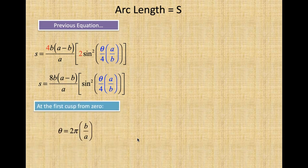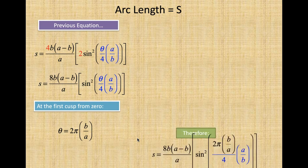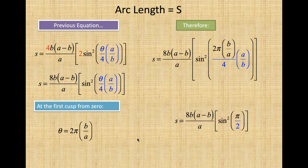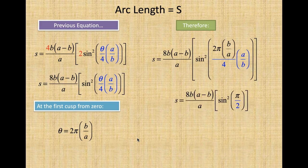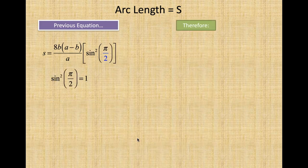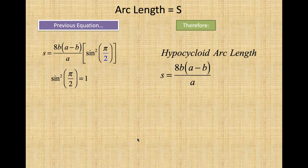At the first cusp from 0, theta is equal to 2πb/a. We plug that in and we get 8b times (a minus b)/a times sin²(π/2). For π/2, sine of π/2 equals 1 — that's 90 degrees. Therefore the hypercycloid arc length is 8b times (a minus b) divided by a.